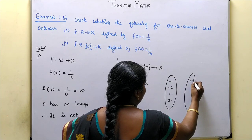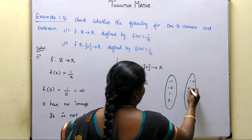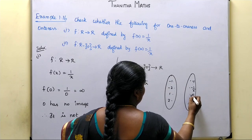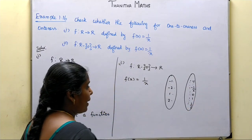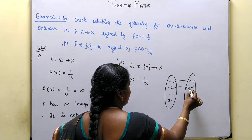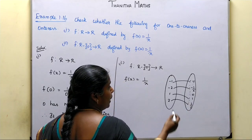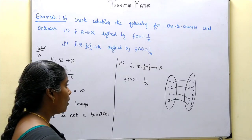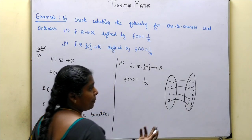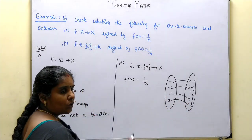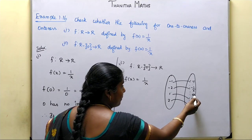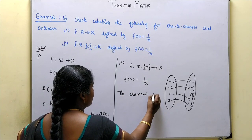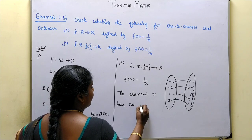Minus 1 maps to minus 1. Minus 2 maps to minus 1 by 2. 1 maps to 1, and 2 maps to 1 by 2. We map in-between values across the real numbers, but the element 0 has no preimage — there is no element that maps to 0 under f(x) = 1/x.